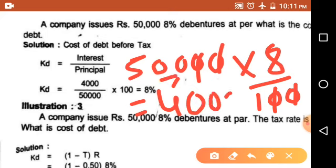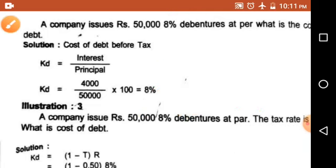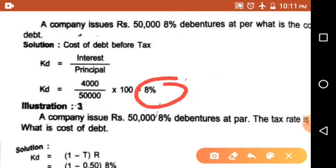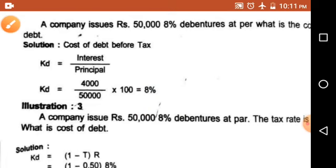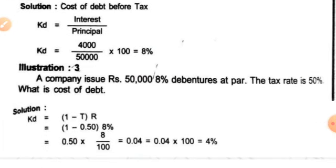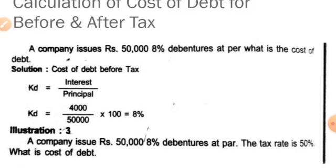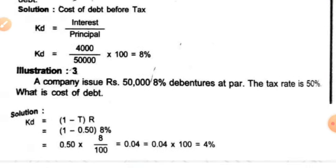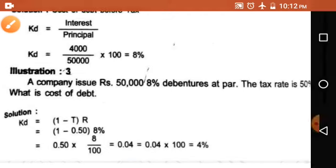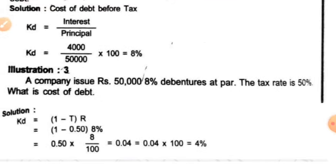You will get 4,000 rupees as interest, divided by 50,000 into 100, giving the answer 8%. This is the before tax calculation. Next example: a company issues rupees 50,000, 8% debentures at par. The tax rate is 50%. What is the cost of debt? The first problem and this problem are the same, but here tax rate is given as an addition. The tax rate is 50%.